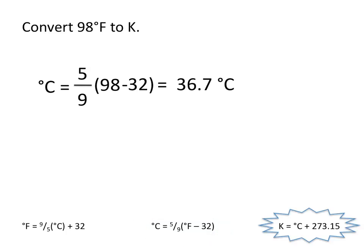We can now use this temperature in Celsius to convert to Kelvin. 36.7 is our temperature in degrees Celsius, plus 273.15 will give us our temperature in Kelvin, which is equal to 310.